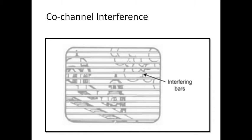There are three types of interference: co-channel, adjacent channel, and ghost channel. In co-channel interference, we commonly see a black and white bar pattern on the TV screen — this bar pattern is due to co-channel interference. Sometimes these bars move up or down if the beat frequency is not a multiple of the field frequency. Two TV stations operating at the same carrier frequency located closely together will cause interference. This phenomenon in the fringe area is called co-channel interference.